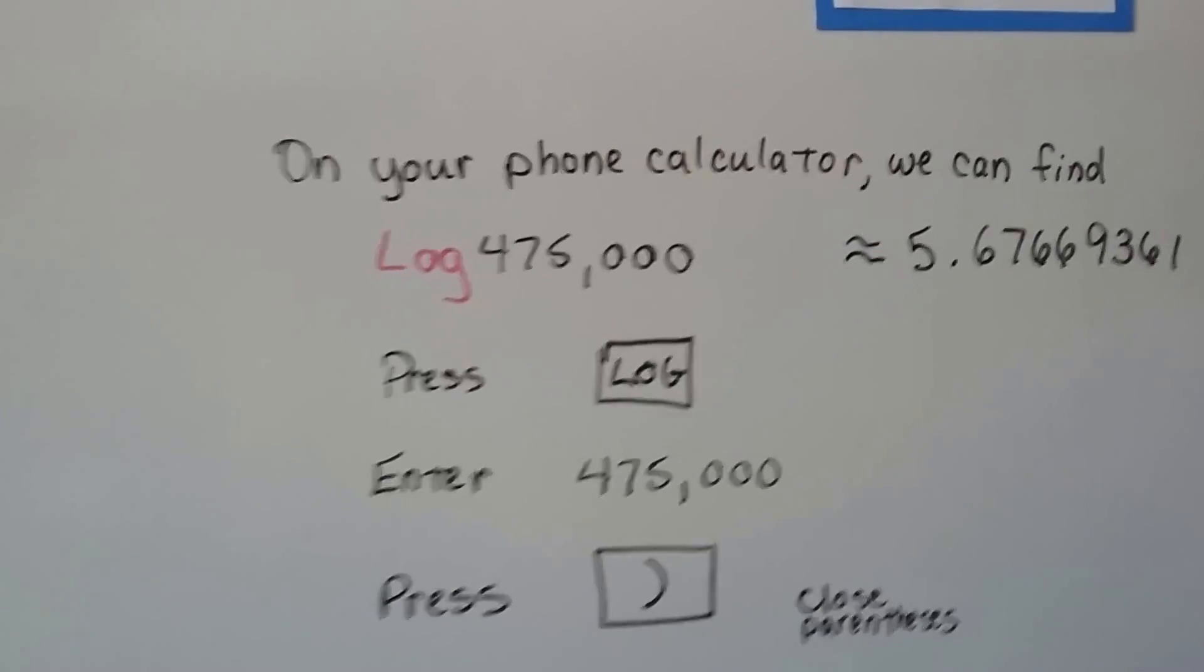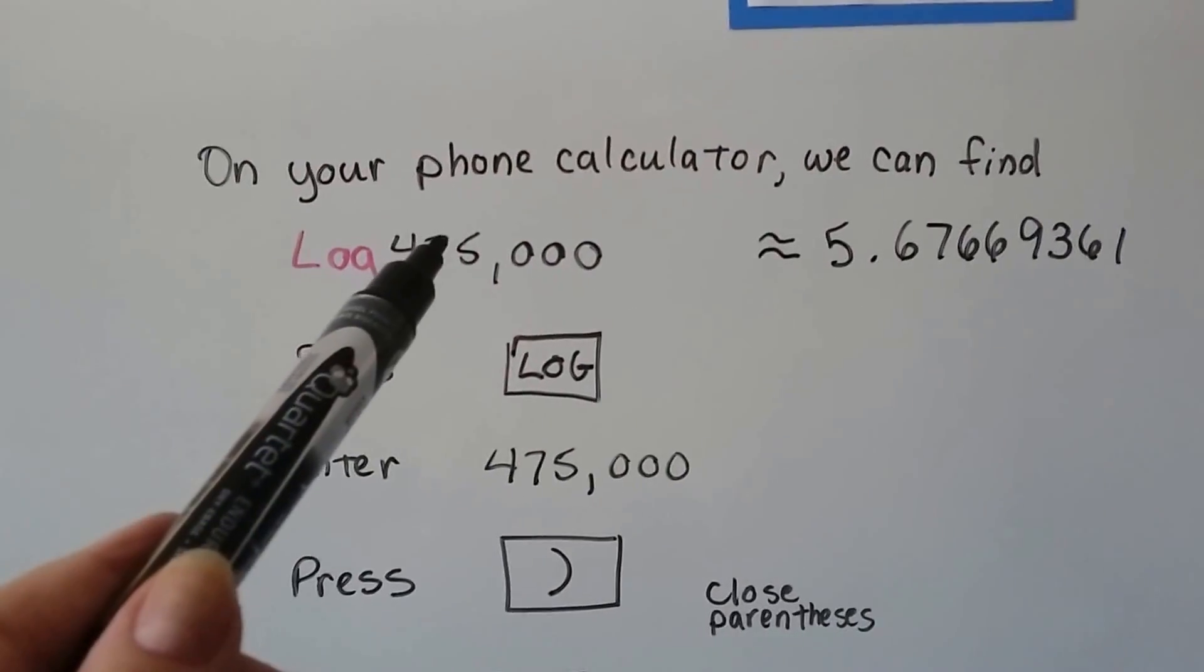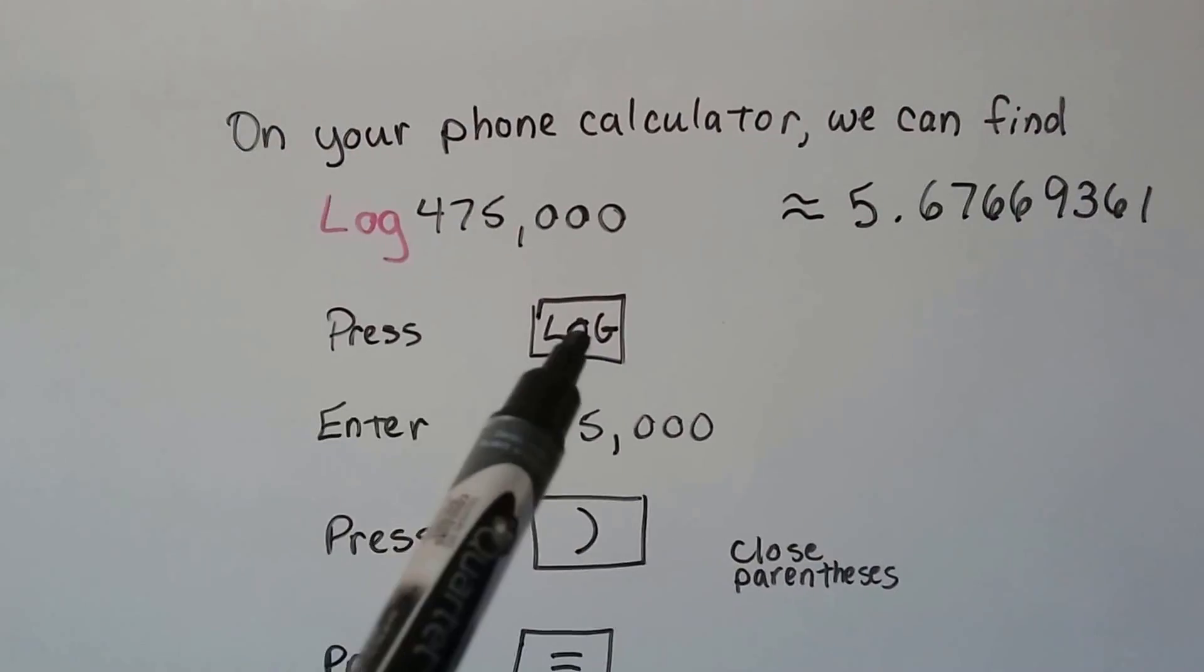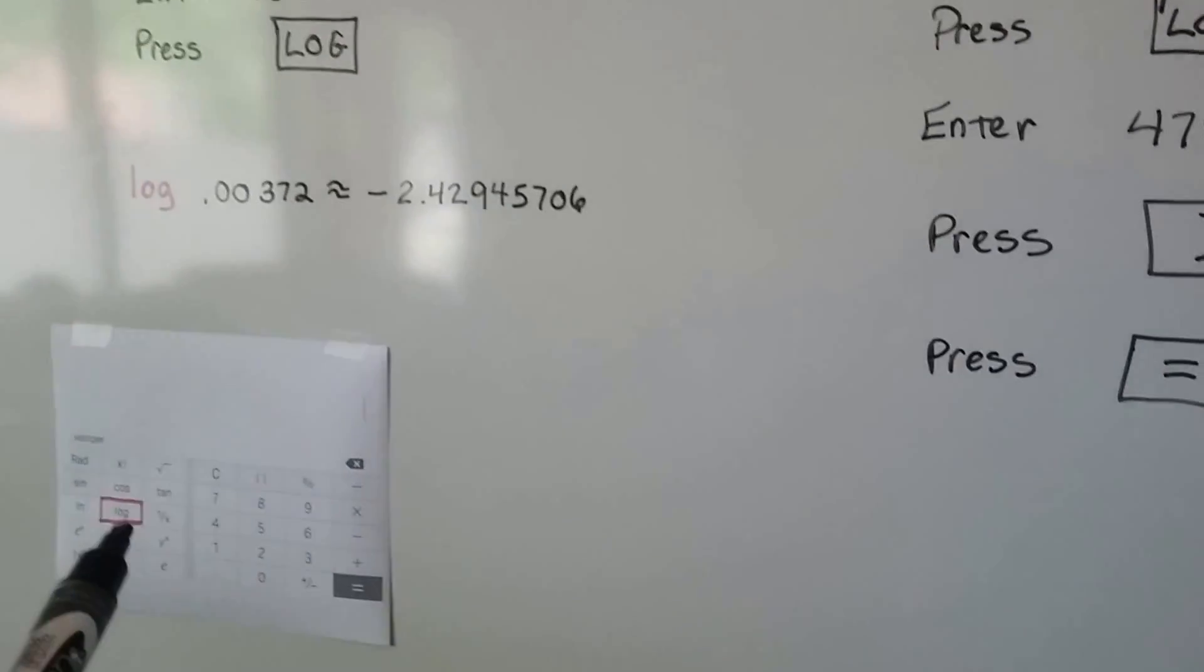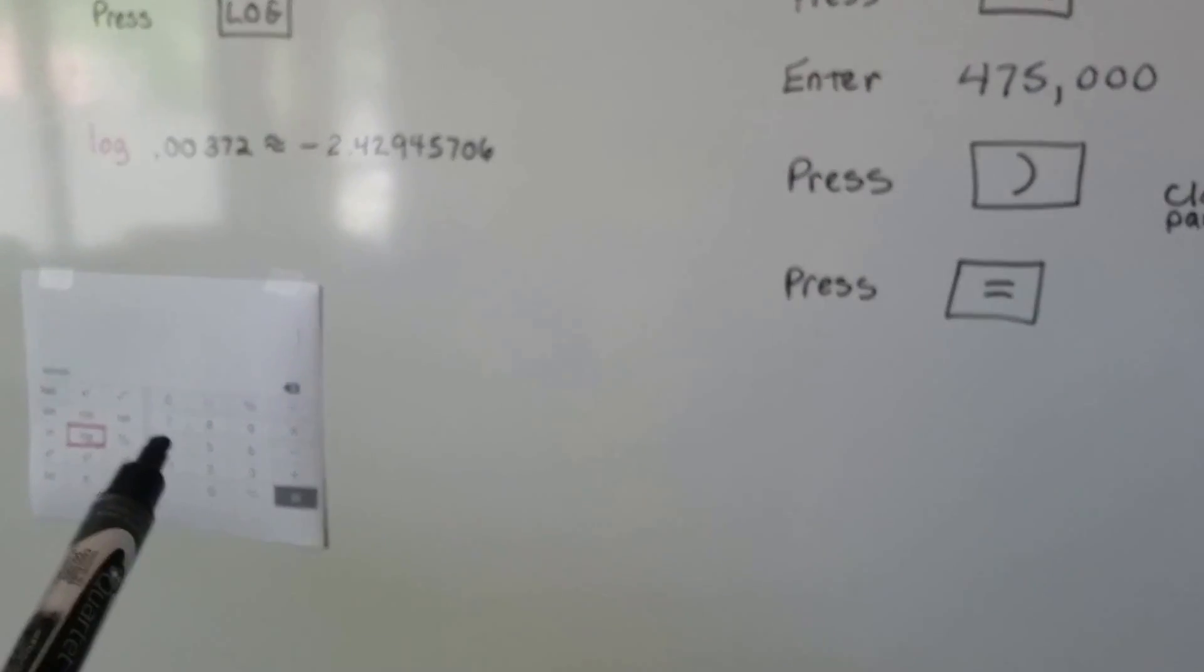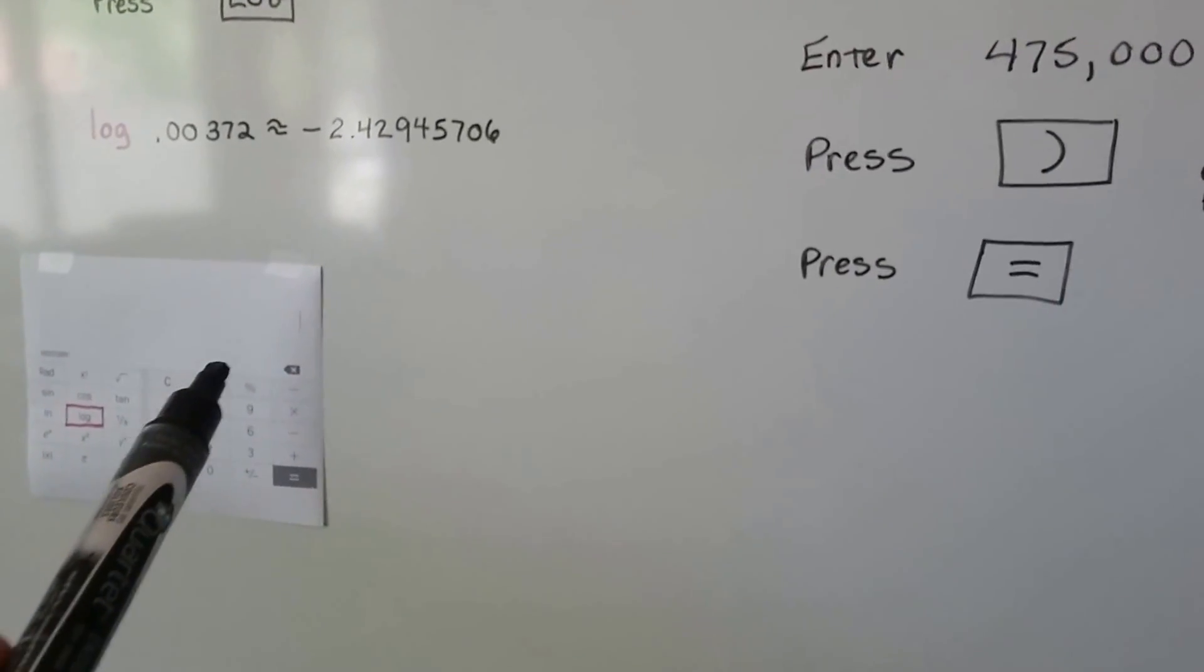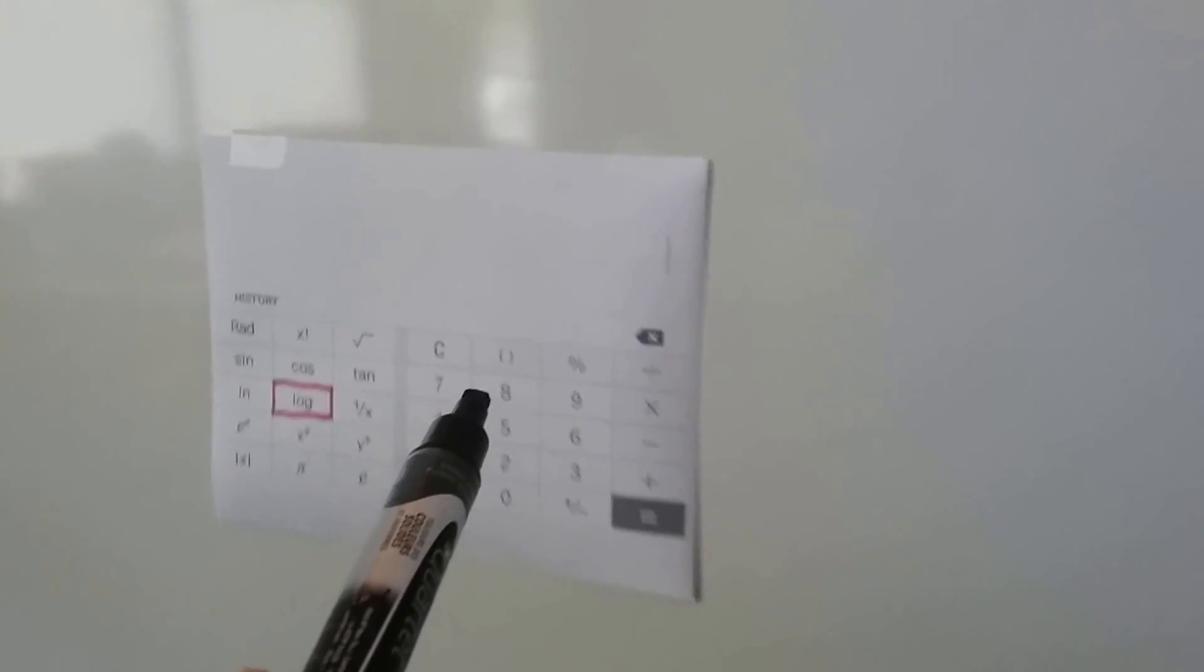On your phone calculator, to find this log 475,000, you press the log button first. Then you enter the 475,000 and press the close parentheses key.